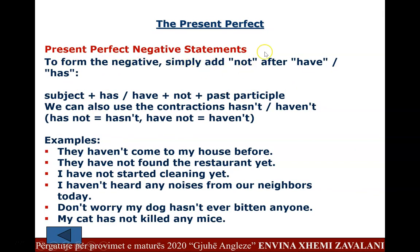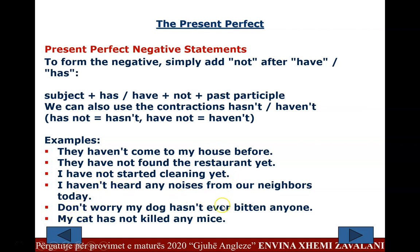To form the negative: subject + has/have + not + past participle. Contractions: has not = hasn't, have not = haven't. Examples: 'They haven't come to my house before.' 'They have not found a restaurant yet.' 'I have not started cleaning yet.' 'I haven't heard any noises from our neighbors today.' 'My dog hasn't ever bitten anyone.' 'My cat has not killed any mice.'